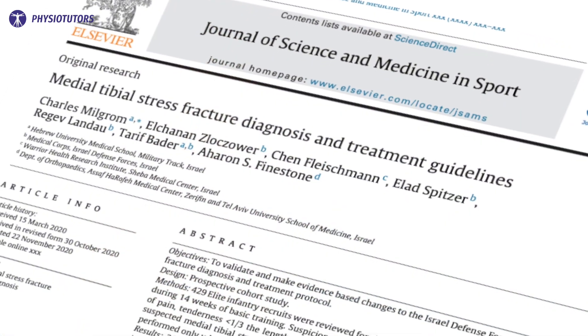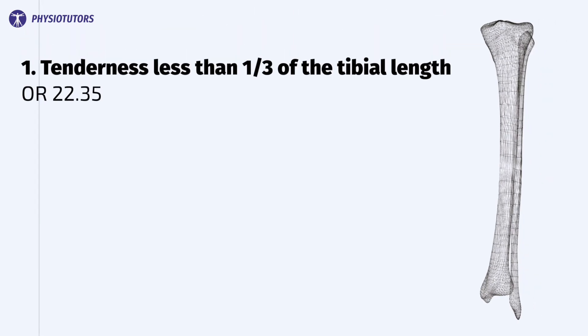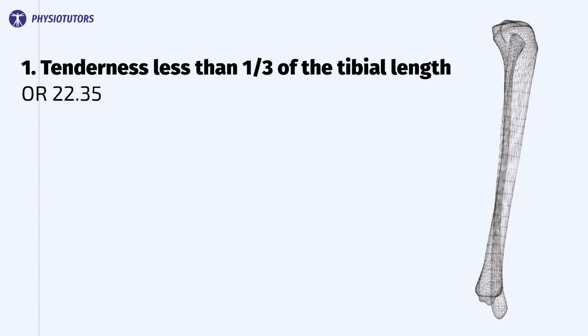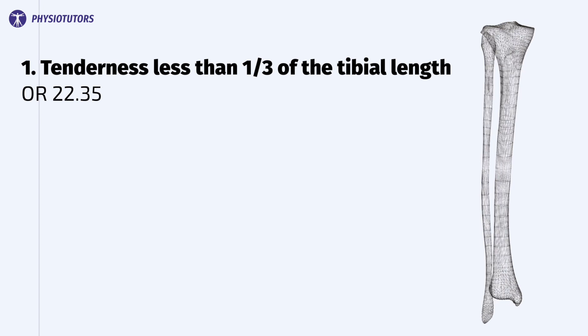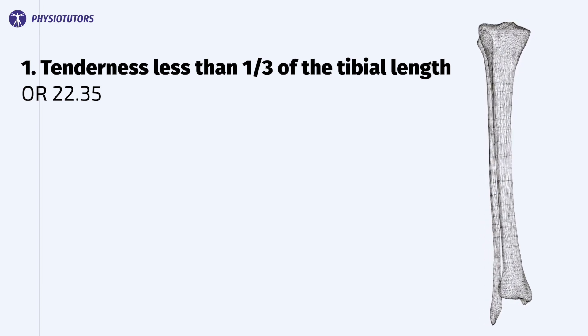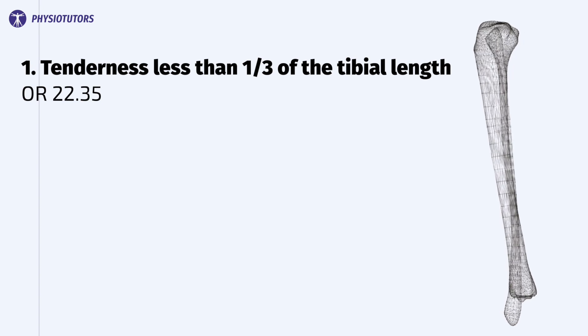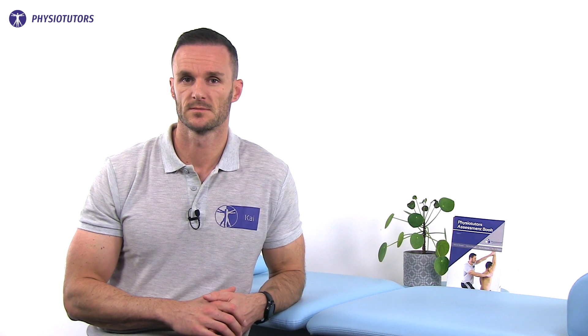Milgram et al., in the year 2021, evaluated the following signs and symptoms indicating a tibial stress fracture in a population of male military recruits. Number one: tenderness less than one-third of the tibial length. In the case that the area of tenderness on the medial tibia was equal to or less than 10 centimeters, the odds ratio for a tibial stress fracture was 22.35. This is actually an important finding as it differs from previously stated values in the literature, which use a cutoff point of 5 centimeters or even only 2 to 3 centimeters.